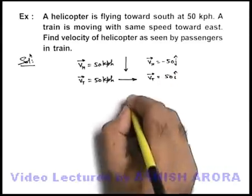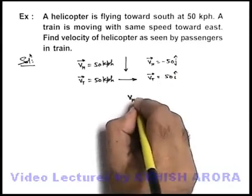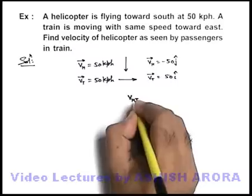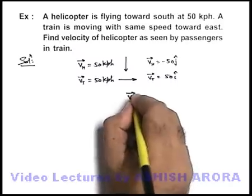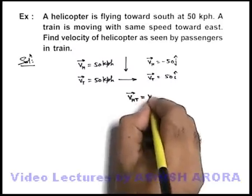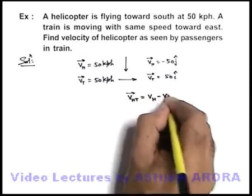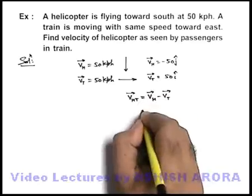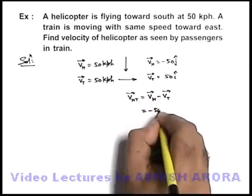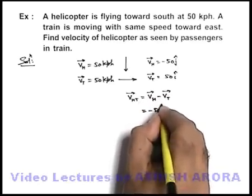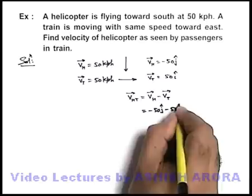In this situation, the velocity of the helicopter with respect to the train, or the passengers in the train, is V_H minus V_T. So this can be simply written as minus fifty j-cap minus fifty i-cap.